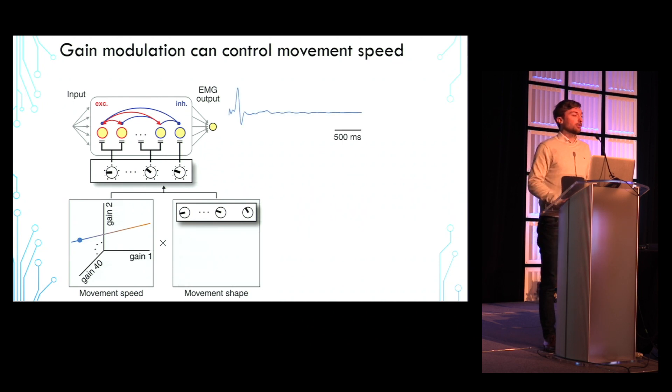Here I'm showing the output of a gain pattern for one particular movement shape multiplied by a point on the gain manifold that generates fast movement outputs, now by the point on the gain manifold that generates medium speed outputs, and finally for the slow outputs.